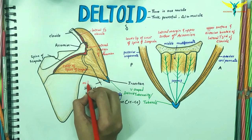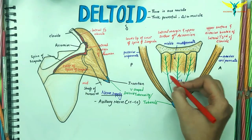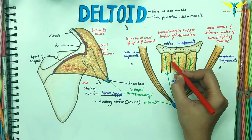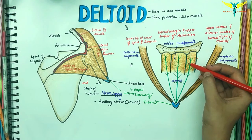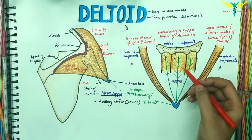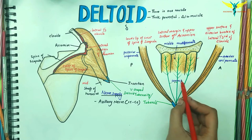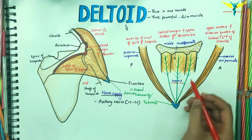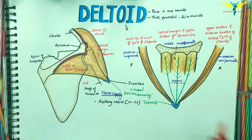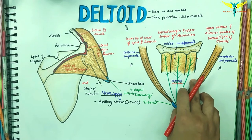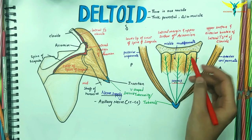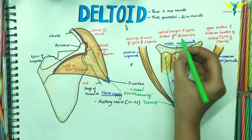The fibers of the multipinnate middle part arise from four septa attached to the acromion, and these fibers converge onto three septa of the insertion, which are then attached to the deltoid tuberosity or tubercle. Due to this multipinnate arrangement, the middle acromion part of the deltoid is the strongest part.